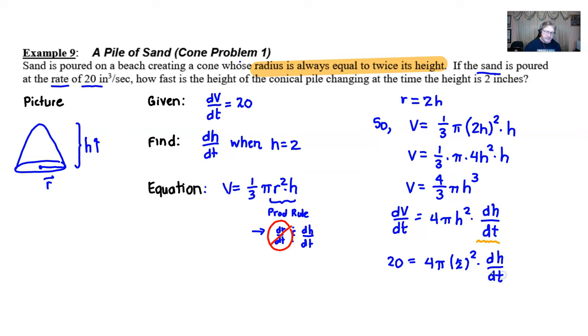When we get the dh/dt by itself, well I've got a 4 times a 4 so that's essentially going to be a 16 times pi.